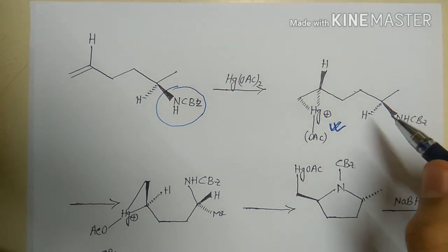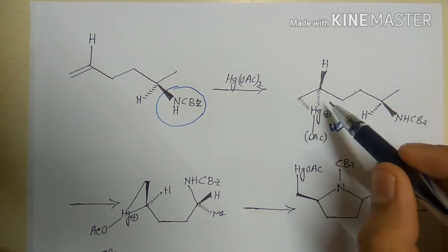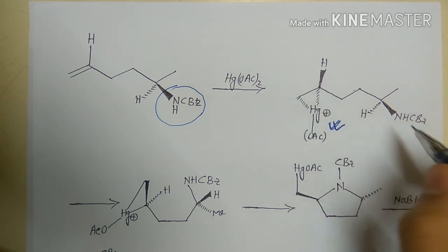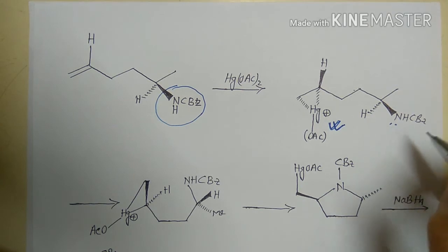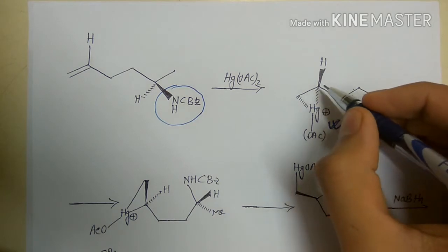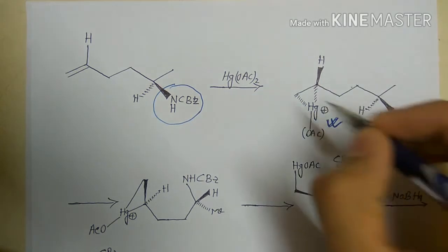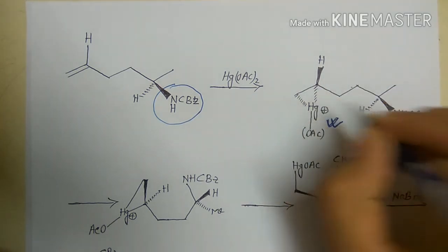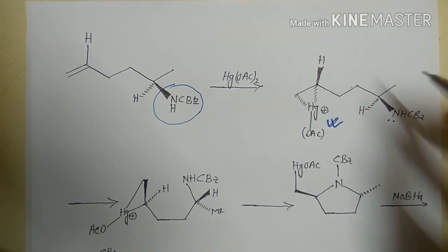Under normal conditions with no other nucleophile, reaction with water would give an alcohol. However, in this case the nitrogen is nucleophilic and will attack instead. We know the nitrogen lone pair must attack the LUMO of the C–Hg bond. The LUMO of the C–Hg bond is above the plane, and the nitrogen is also above the plane, so the alignment is not yet correct — we need to rotate bonds to achieve proper alignment.